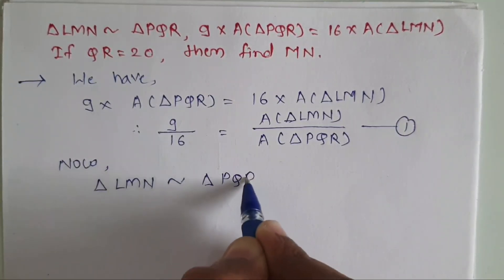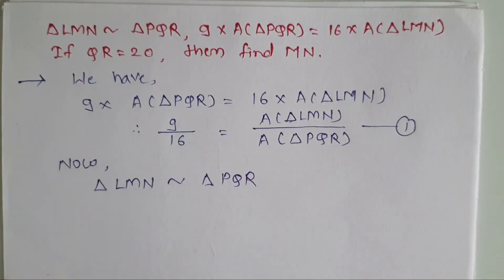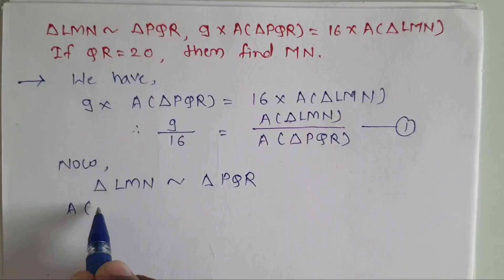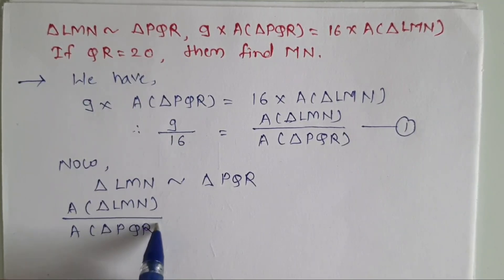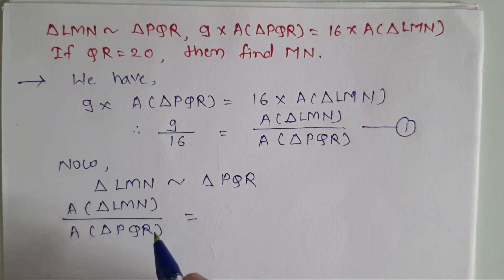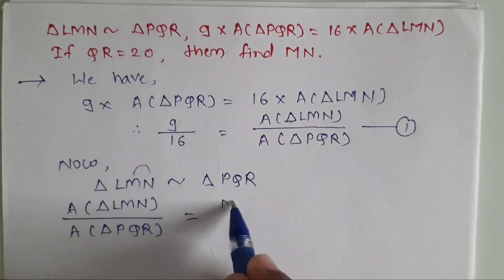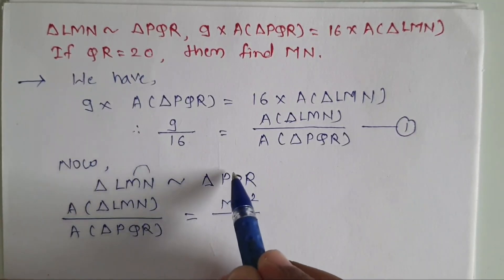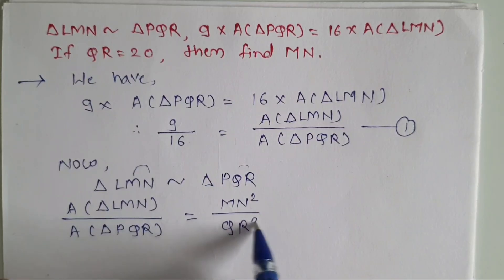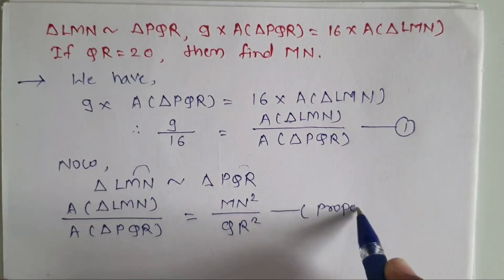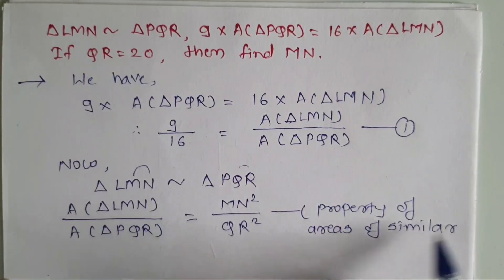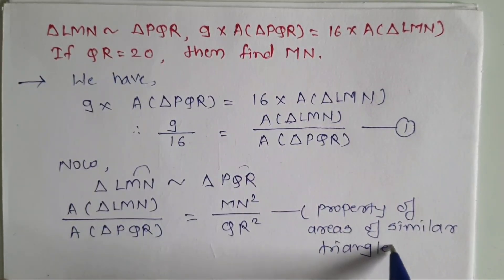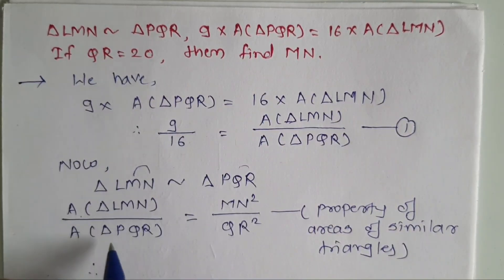Since triangle LMN is similar to triangle PQR, by the property of areas of similar triangles, area of triangle LMN divided by area of triangle PQR equals MN² divided by QR². Substituting from equation 1: 9 by 16 equals MN² divided by QR².